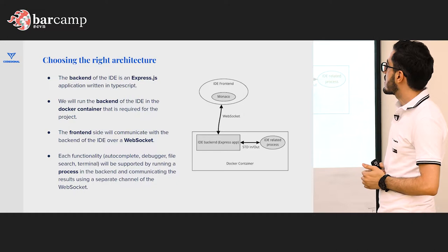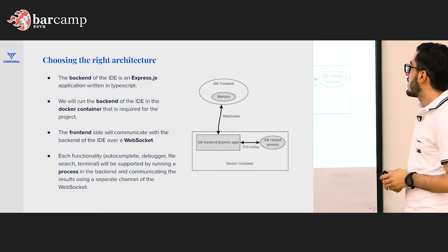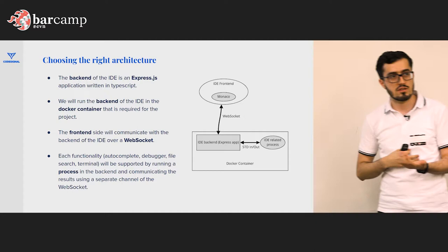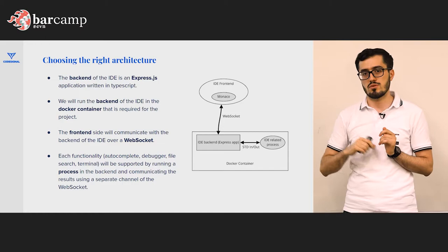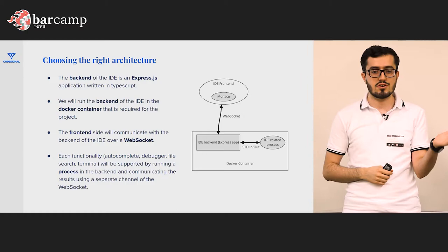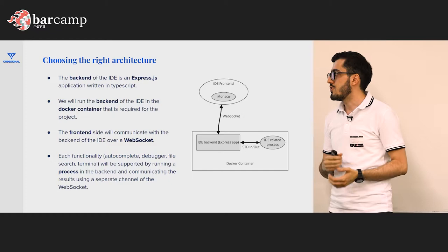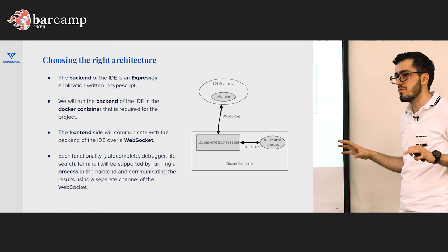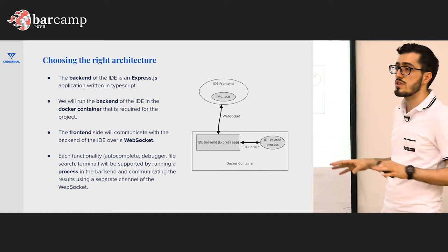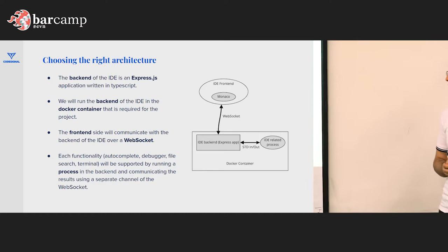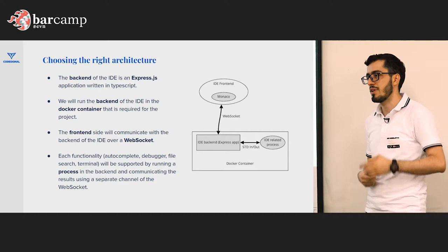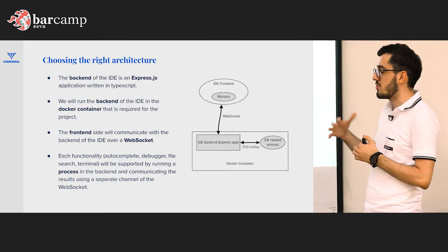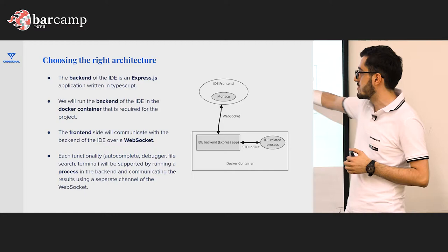Your IDE front-end should have Monaco and communicate with your IDE backend over a WebSocket the entire time. If you write something, it should notify your backend so it can suggest auto-completion or flag errors. For any feature like the terminal, you need constant communication with your backend via WebSocket. The IDE backend normally runs in a Docker container for an isolated environment, and in that container you start IDE-related processes — for example, if you want a terminal, you run Bash and attach it via WebSocket to the terminal in the client side.